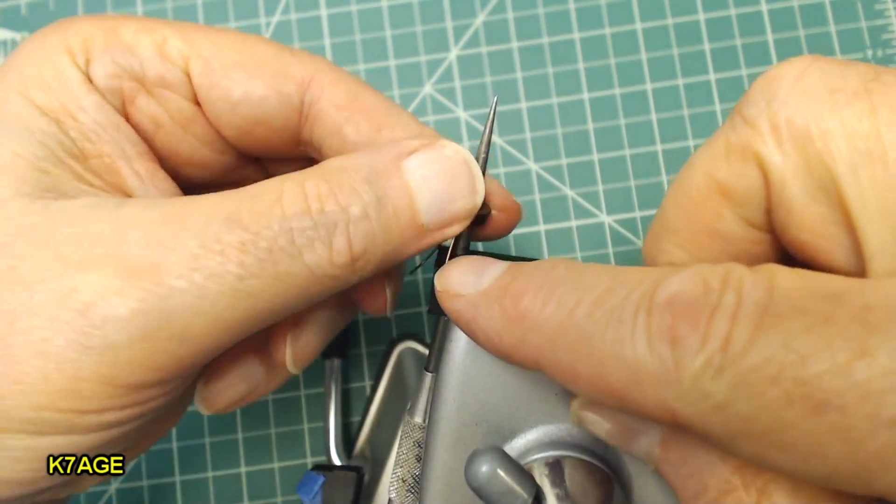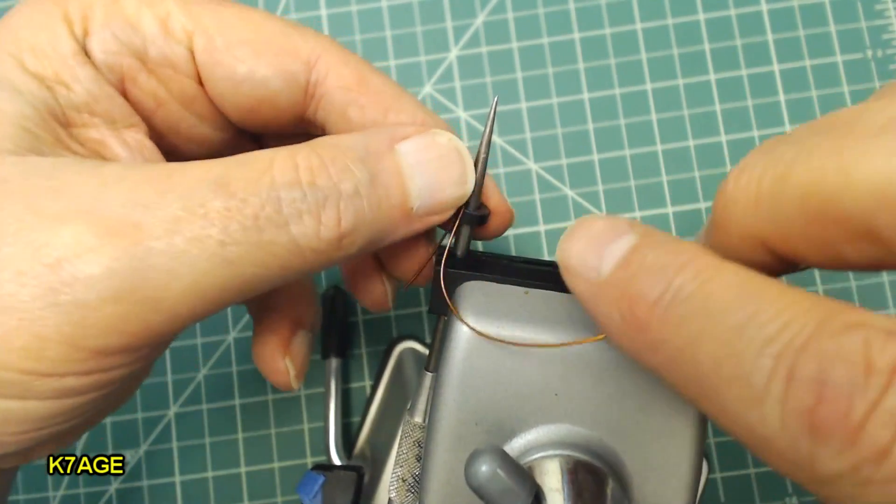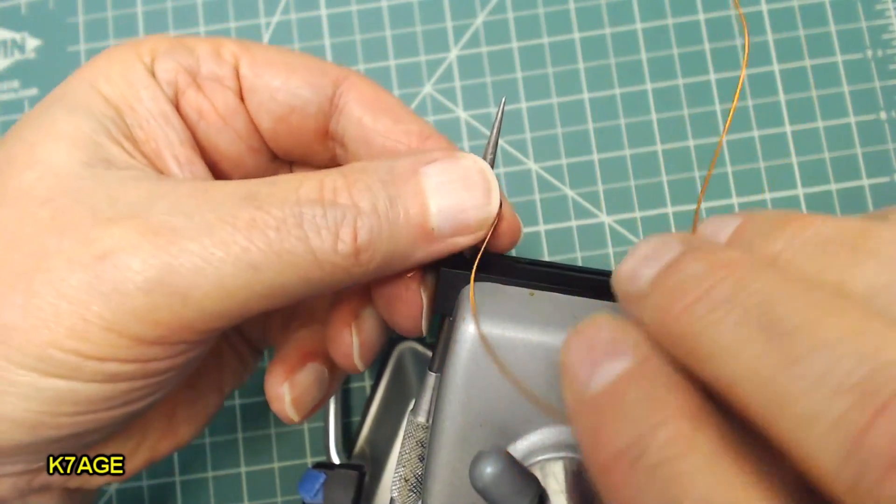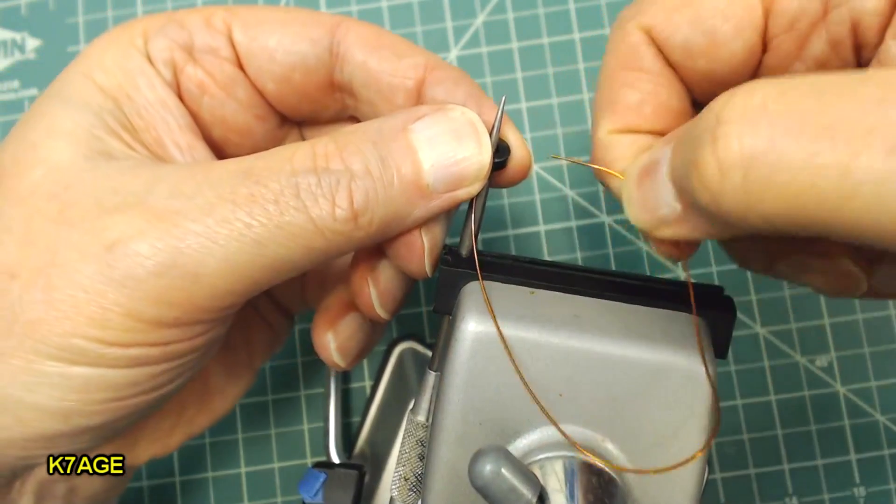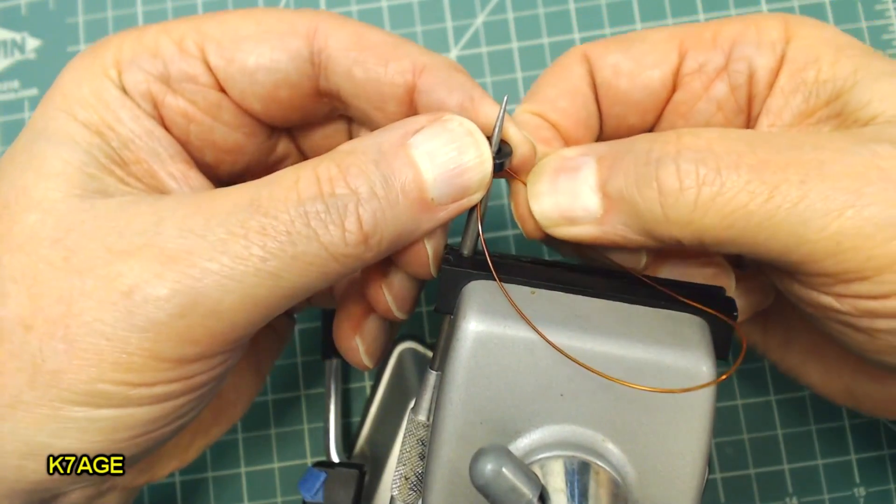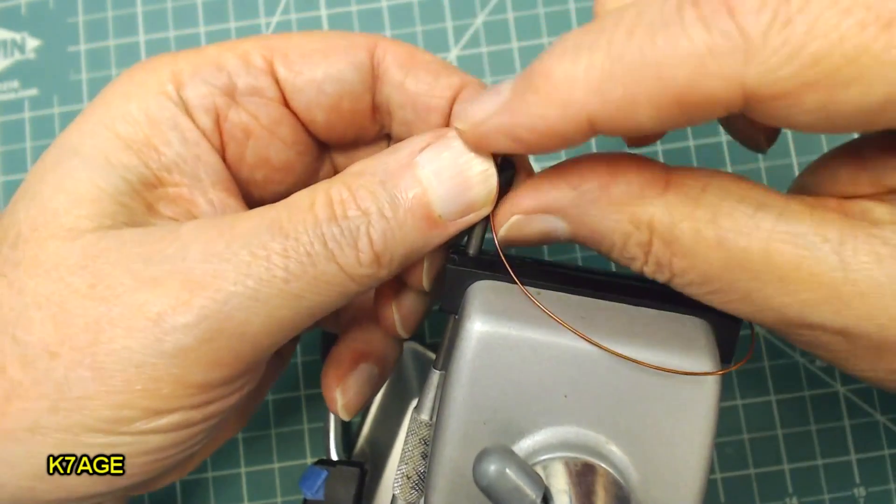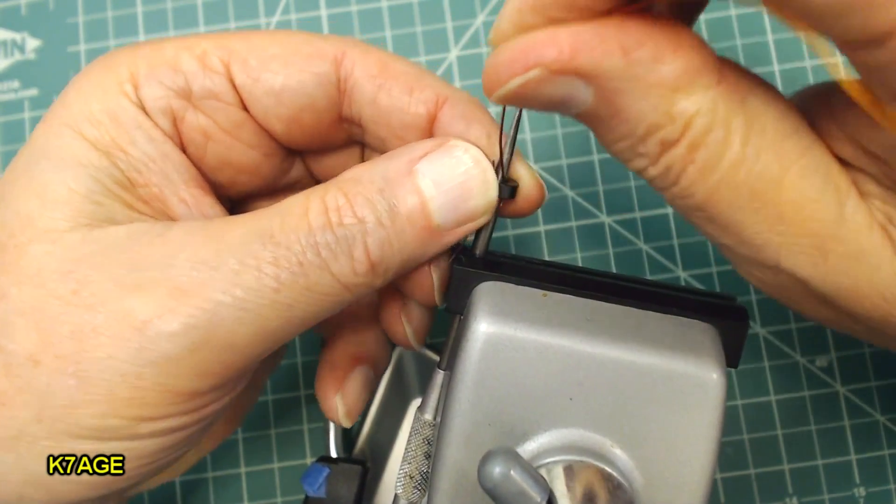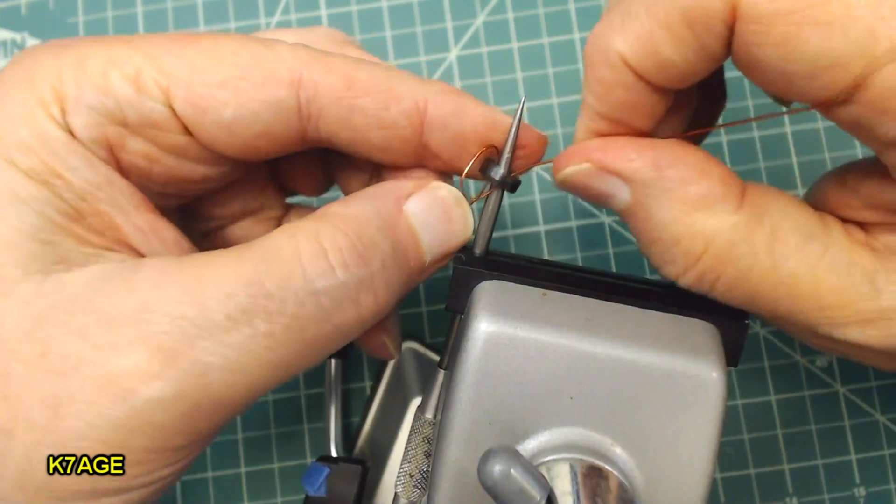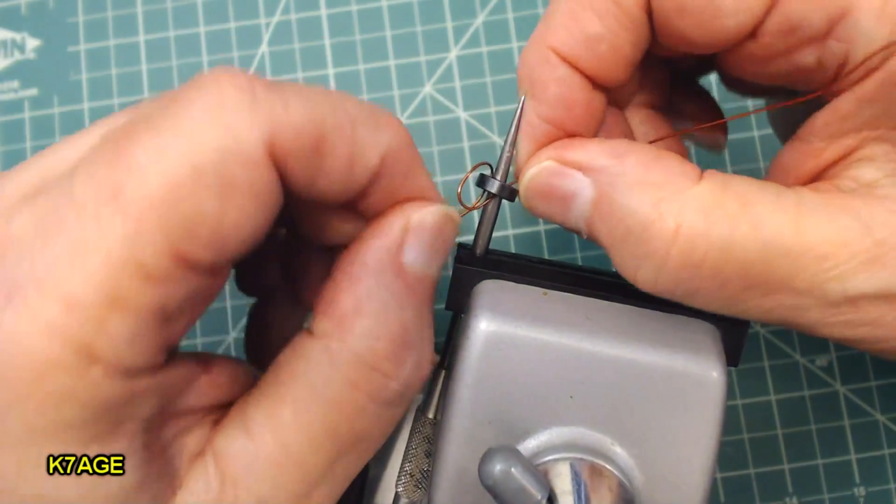And the first few are kind of hard to get going because everything's kind of loose. I'm going to feed the wire up through the core. So just passing the wire through was the first turn. Every time the wire goes through the core, it counts as one turn.